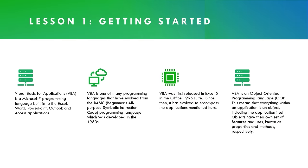Before we get hands-on, let's get an overview of VBA. VBA is a Microsoft programming language that is currently built into Excel, Word, PowerPoint, Outlook, and Access applications. It's one of the many programming languages that evolved from the BASIC programming language, which was developed in the 1960s. It was first released in Excel 5, in the Office 1995 suite. Since then, it evolved to encompass those applications. VBA is known as an object-oriented programming language — OOP — which means that everything within an application is an object, including the application itself.